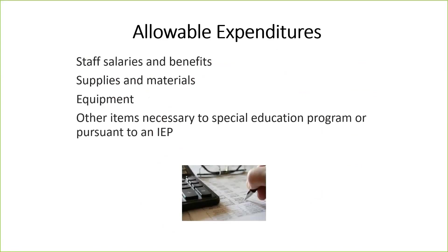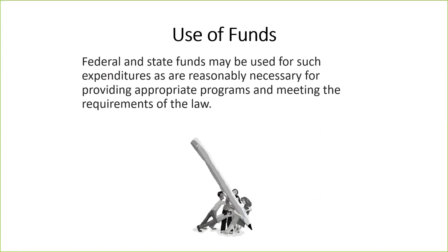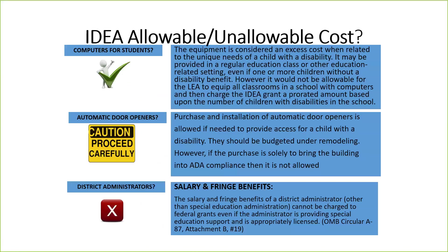Here again is another list of allowable expenditures: staff salaries and benefits, supplies and materials, equipment, or any other items necessary to the special education program or pursuant to the IEP. These funds may be used for such expenditures that are reasonably necessary for providing appropriate programs and meeting the requirements of the law. The next two slides go over some ideas for what might be allowable or unallowable costs under IDEA — they're just some examples, but I think they give a clearer explanation of things you may use these funds for.